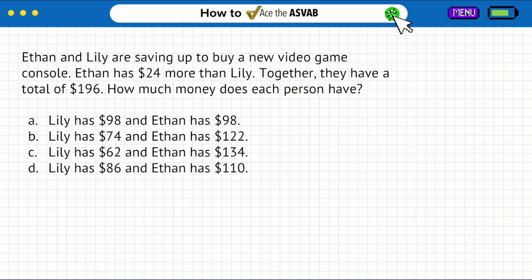First things first, as always, we want to understand what it is that we want, and we always go straight to the question for that. So we can highlight that nice and easy and say how much money does each person have. So right there in the beginning, we're trying to figure out money, but there's also something pretty interesting here because notice that we are trying to solve for two things: how much money Lily has and how much money Ethan has. Look at the answers.